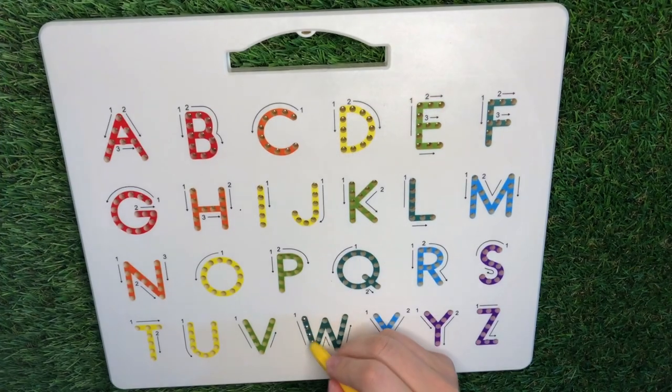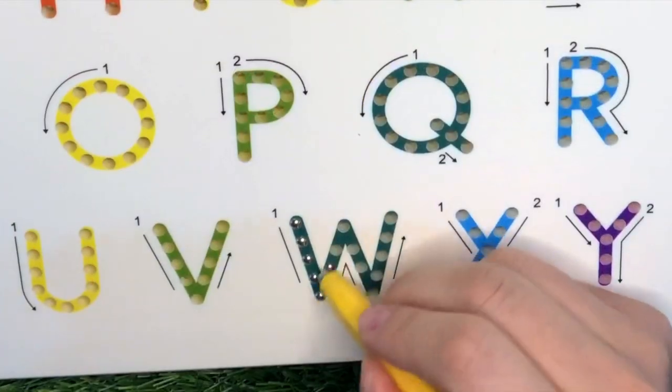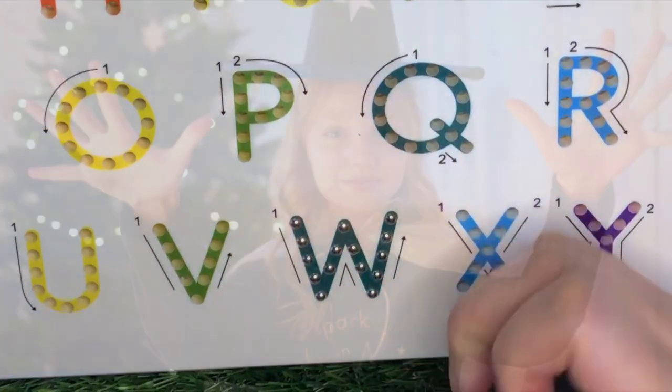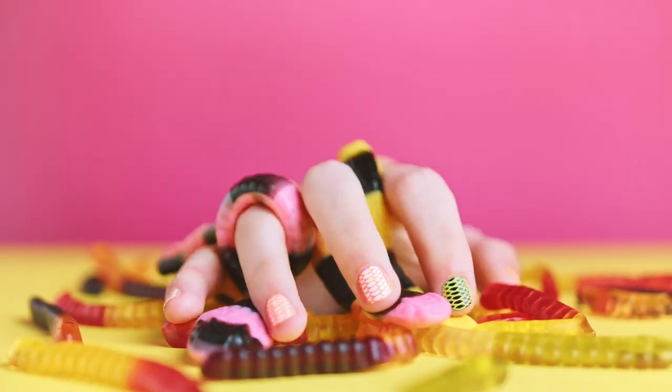Can you guess the next one? W. Slant down, up, down, and up. W is for witch, worms, and whale.